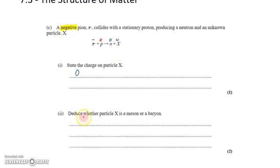Part 2 says deduce whether particle X is a meson or a baryon. Mesons and baryons are both combinations of quarks. Baryons are made of three quarks or three antiquarks, and mesons are made of one antiquark and one quark.